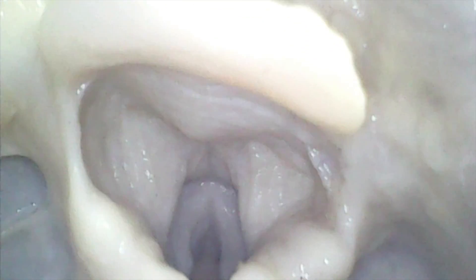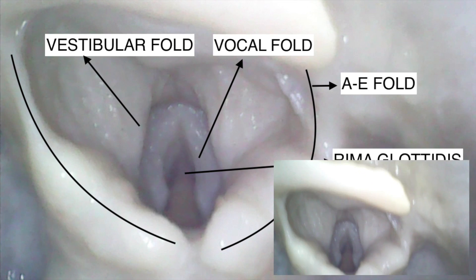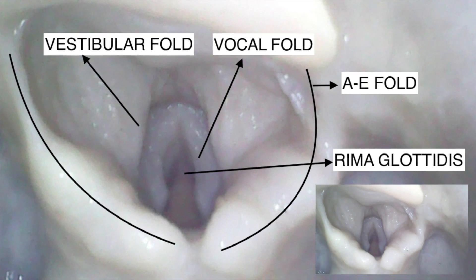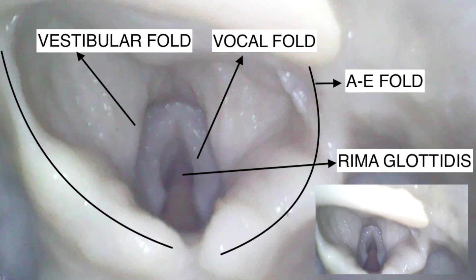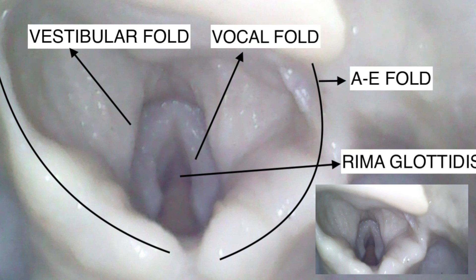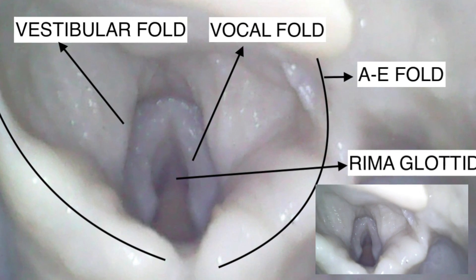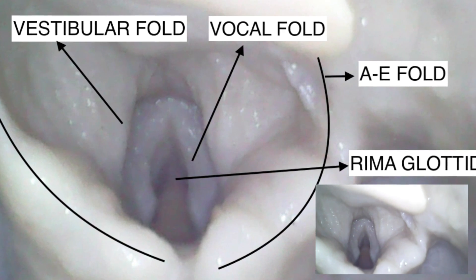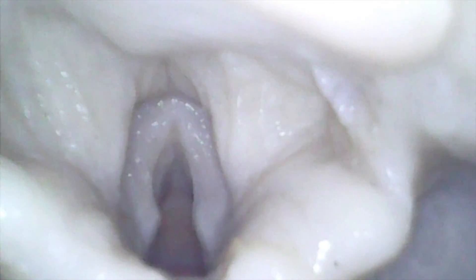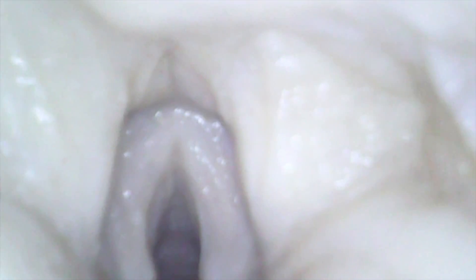When we see through the laryngeal inlet, in the center you can see two longitudinal folds — these are the vocal cords. The space between these vocal cords is termed the rima glottidis.